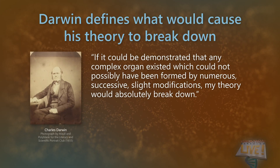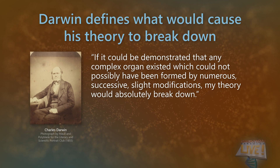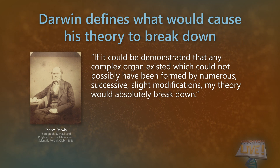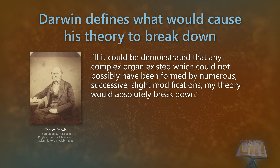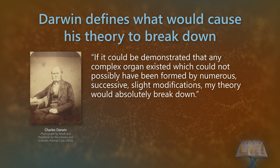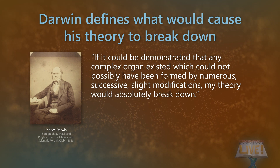He did, however, famously admit: 'If it could be demonstrated that any complex organ existed which could not possibly have been formed by numerous successive slight modifications, my theory would absolutely break down.' Now, while Darwin was referring to organs, we can apply this logic at the molecular level, since evolutionists now assert that even DNA formed as a result of random natural processes.